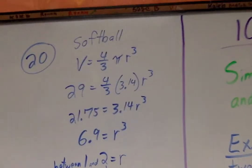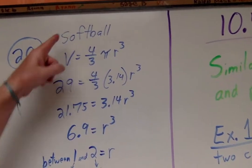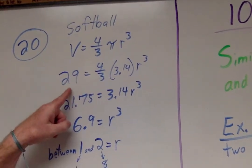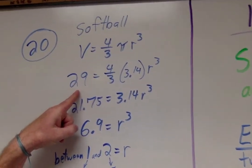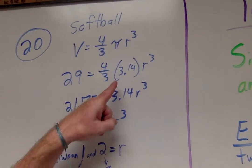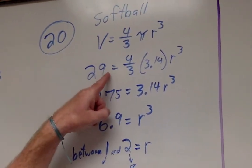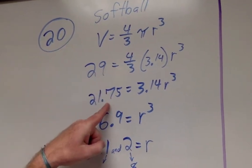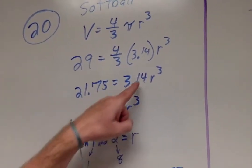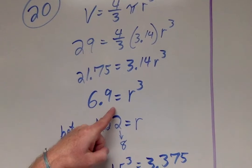And our last question, number 20! They gave you a softball! And they said the volume of the softball is 29! Well, in this case, everybody, I did it a little bit differently! I decided to multiply both sides by 3 fourths first! So, I found out that 75% of 29 is a 21.75!